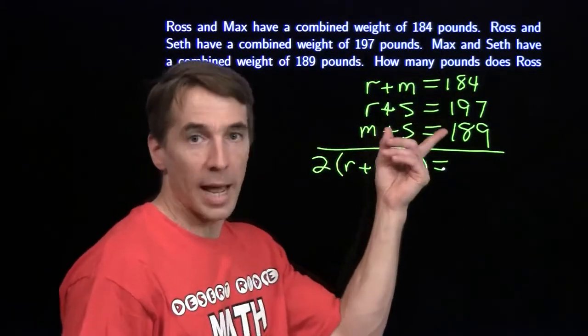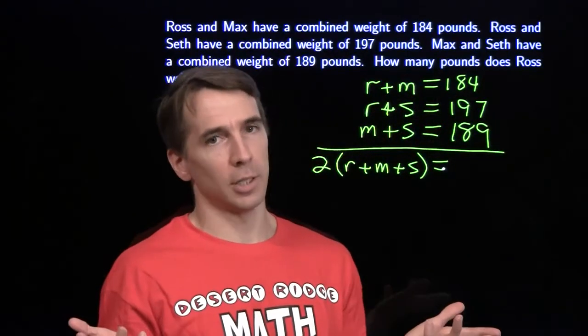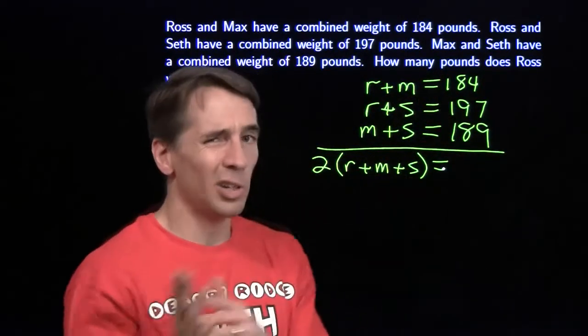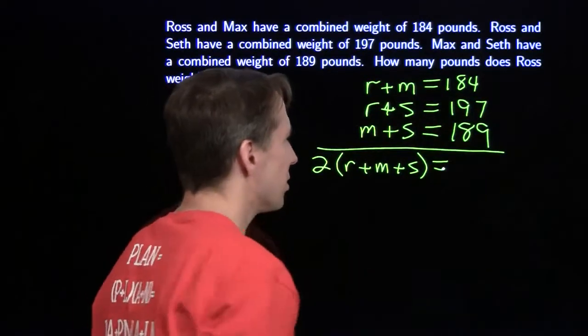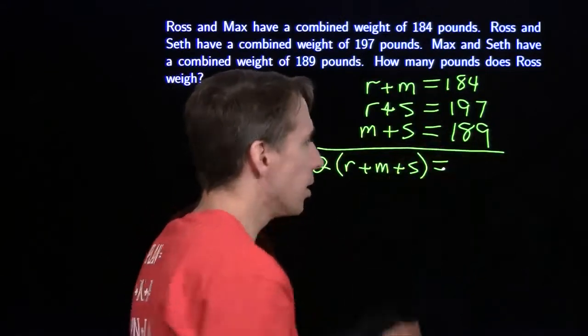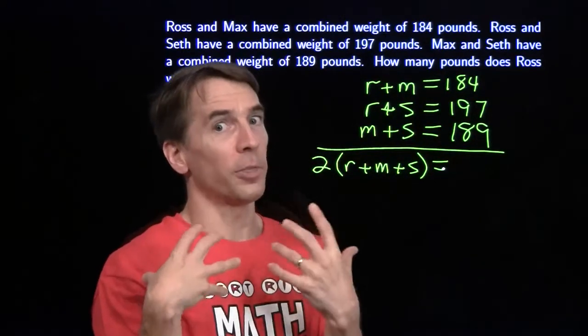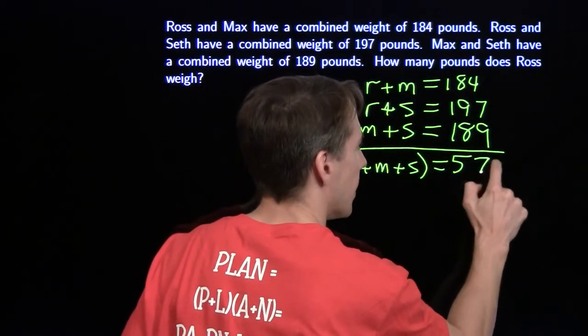Now adding these up, well those look like annoying numbers to add, so I'm going to pretend they're all 200. If they're all 200, that gives me 600. But each one is a little less than 200, so I need to adjust. This is 16 less, this is 3 less, that's 19 less total. This is another 11 less, so that's 30 less than 600, which leaves me with 570.